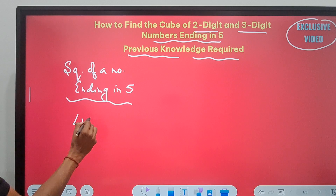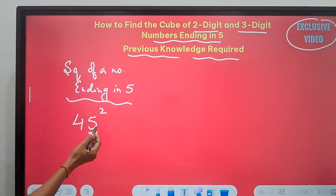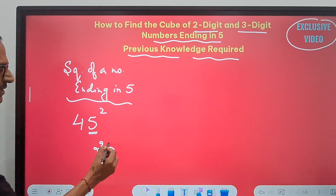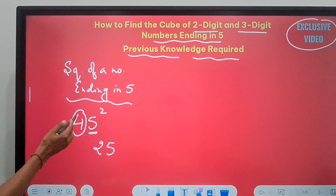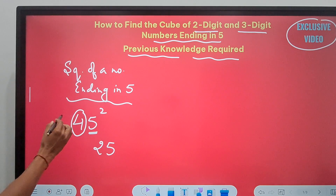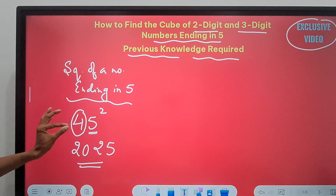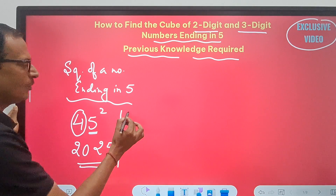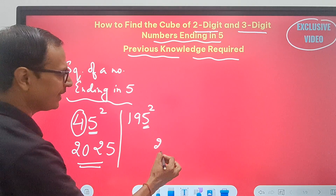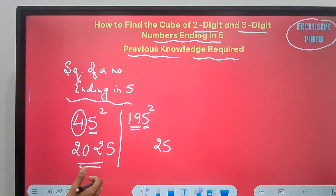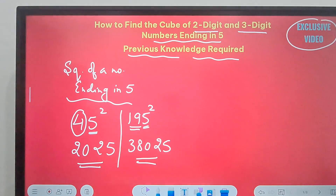For example, 45 squared: the five is squared to give 25, which forms the last two digits. Then multiply 4 by its consecutive number 5: 4 × 5 = 20. So 2025 is the square of 45. One more example: 195 squared. 5² = 25, and 19 × 20 = 380. So 38025 is the square of 195. This is the Vedic Math trick for squaring numbers ending in five.